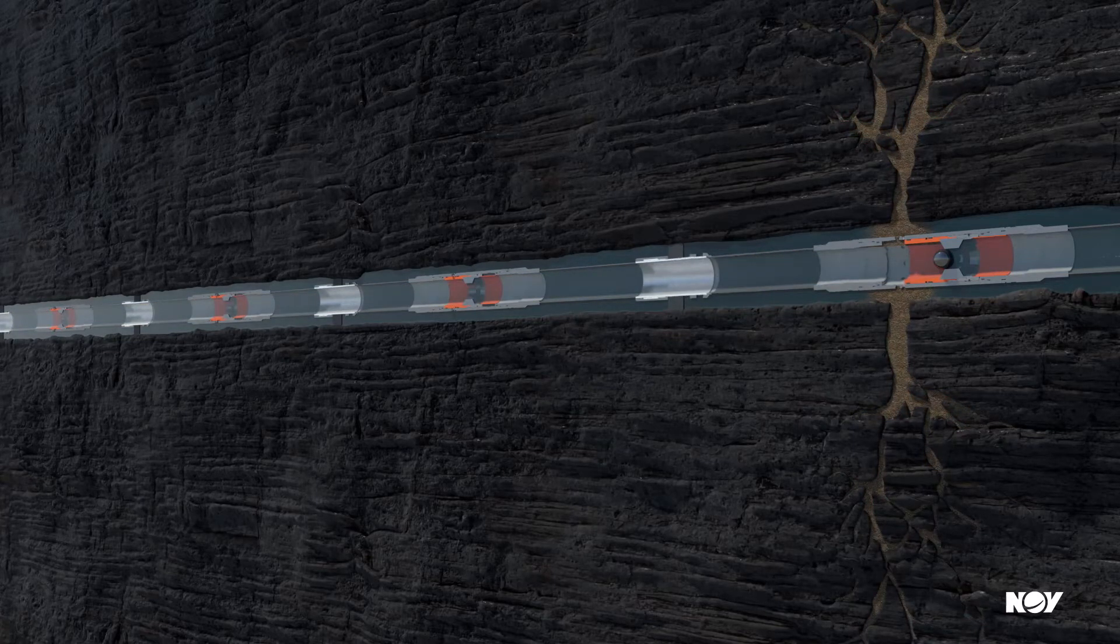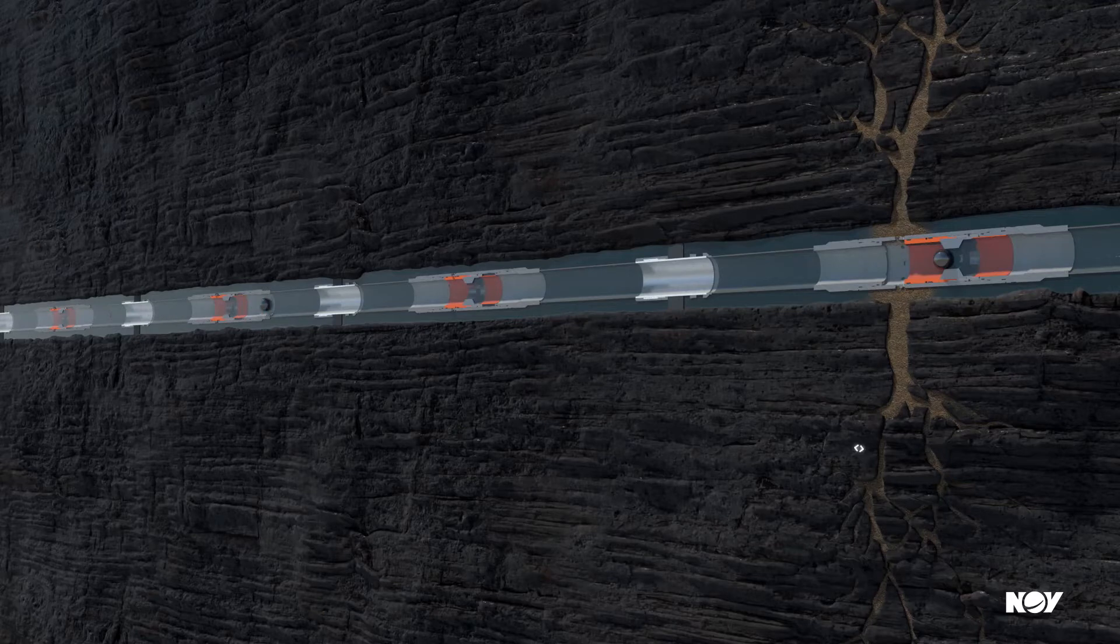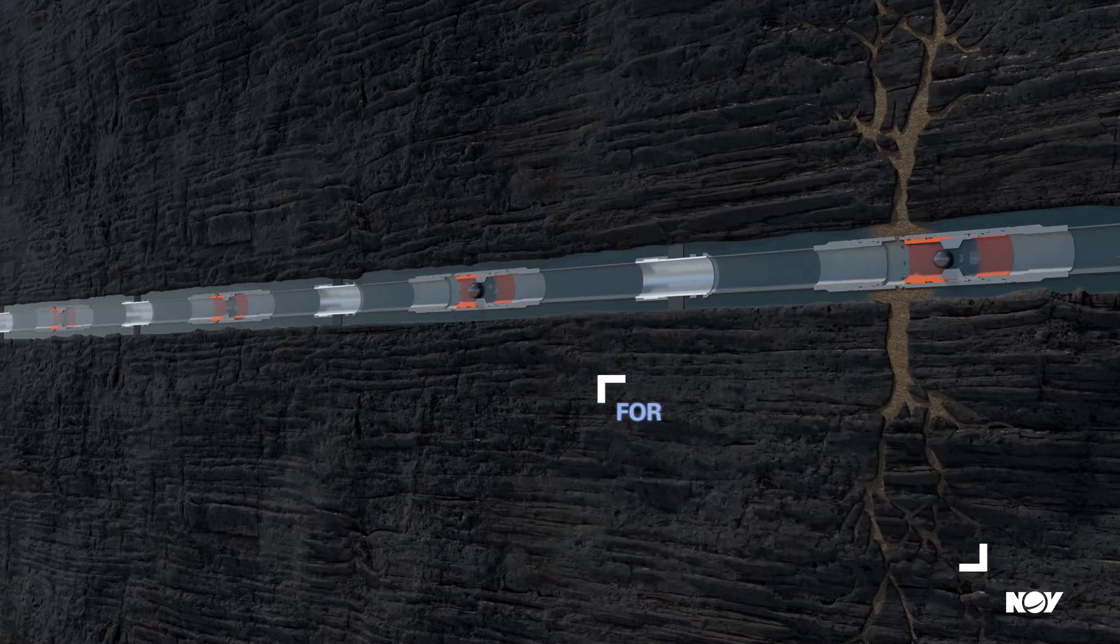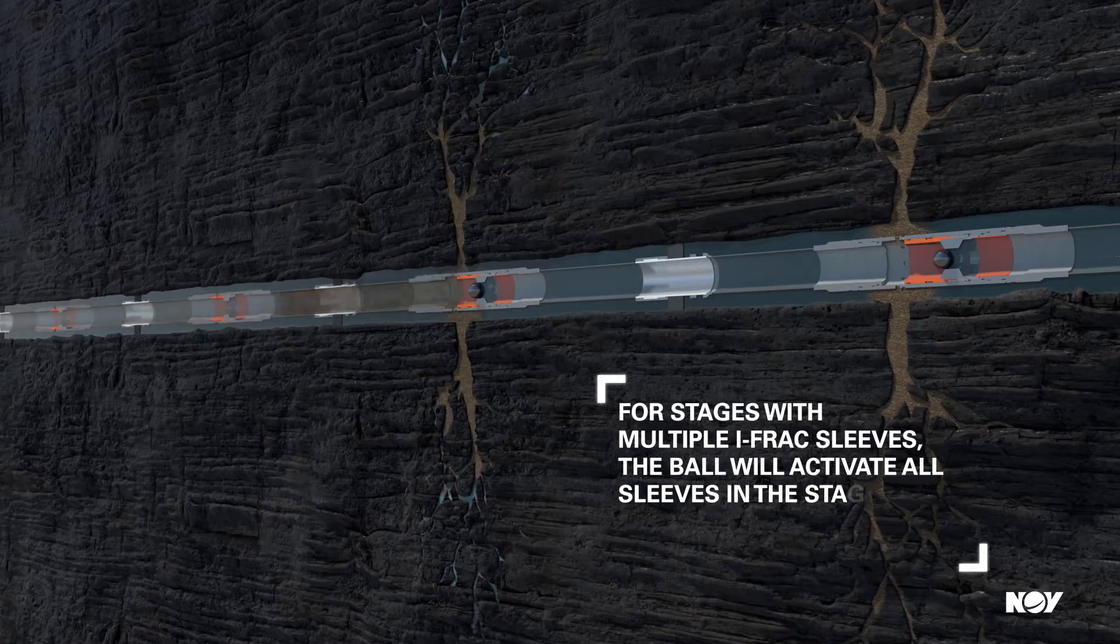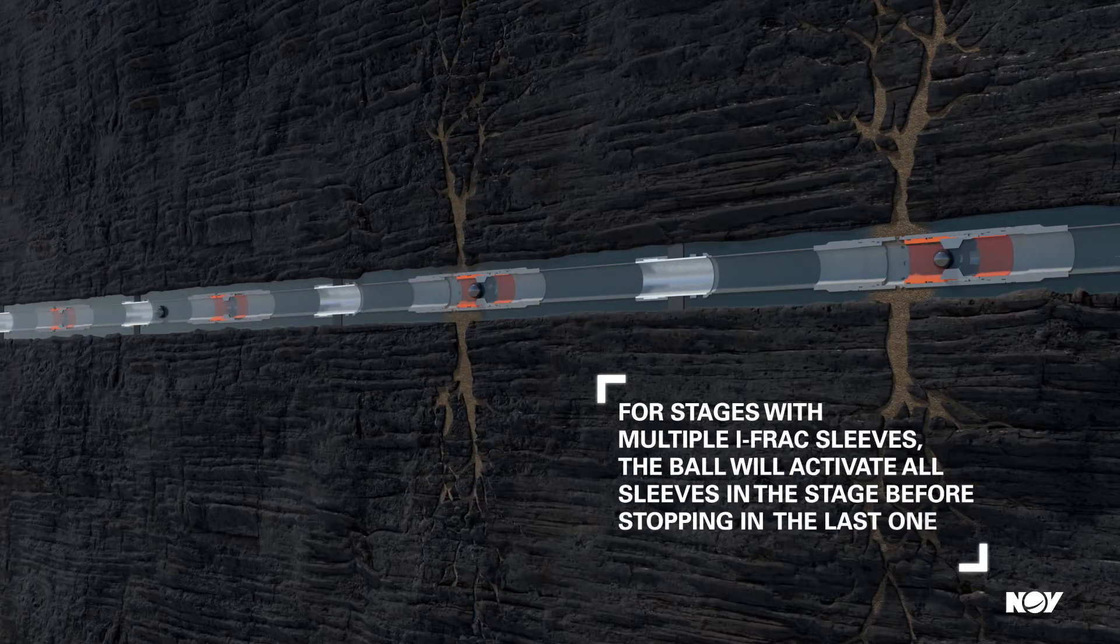For stages containing one IFRAC sleeve, the ball will activate the sleeve and allow communication to the formation. For stages with multiple IFRAC sleeves, the ball will activate all sleeves in the stage before stopping in the last one.